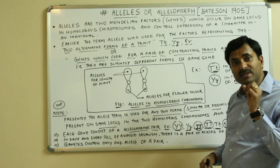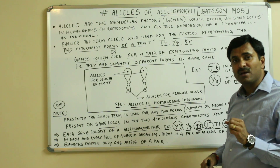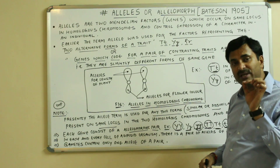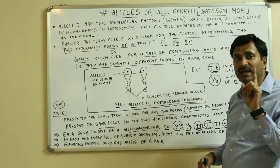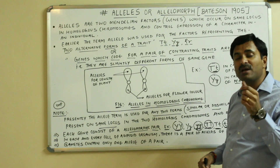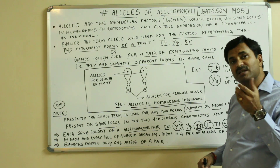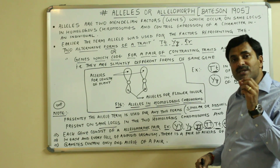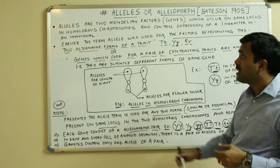Alleles are present in pairs, but only in the case of gametes is a single allele found. Otherwise, in diploid organisms, alleles are always found in a pair.